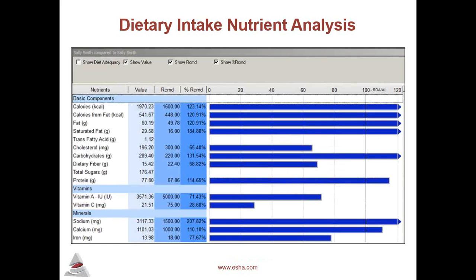Here we see the Bar Graph Report. The Nutrient Analysis Bar Graph Report is another great tool for evaluating Sally's diet. This report compares Sally's diet's daily totals to her recommended amounts. We saw in the MyPlate Report that Sally's diet was low in fruits and vegetables, so it's not surprising that here we see her vitamins A, C, and fiber are low as well. This report also shows that Sally's calorie intake is high, and so are the calorie-associated nutrients — fat, carbohydrate, and protein. From looking at the MyPlate and Nutrient Bar Graph reports, we can determine that Sally would benefit from these possible recommendations: one, decrease her calorie intake per day for weight loss; and two, increase her intake of fruits and vegetables for adequate vitamin and fiber intake.